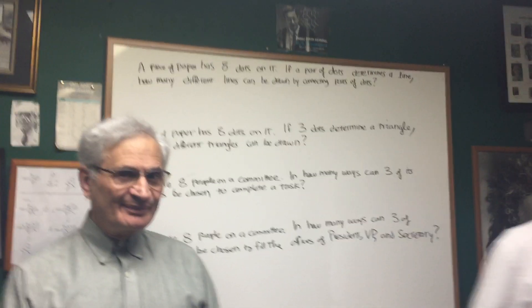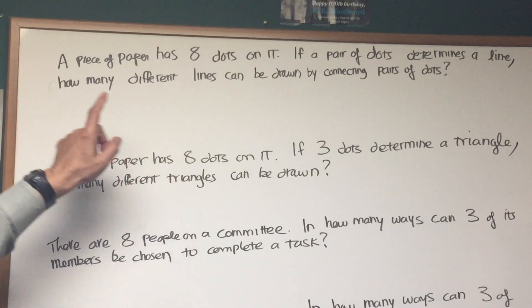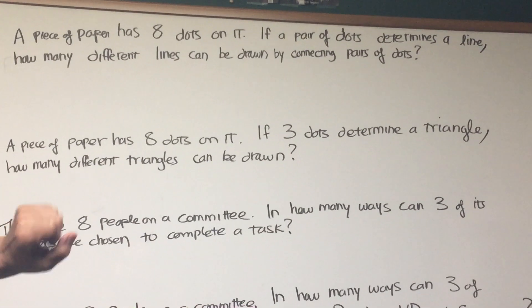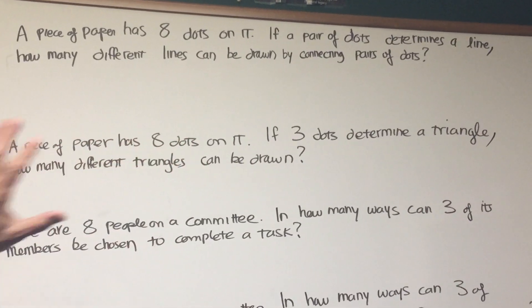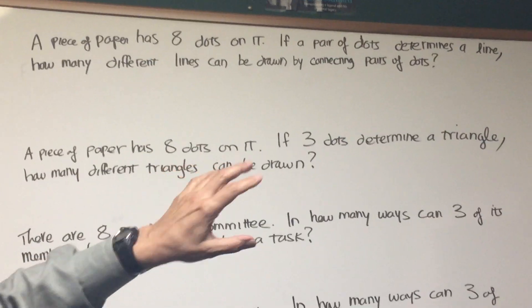Professor Blois will do some live with you. All right, professor, if you'll do the honors. Let's do some problems in combination and permutations. Let's read the first problem here. A piece of paper has eight dots on it. If a pair of dots determines a line, how many different lines can be drawn by connecting pairs of dots?